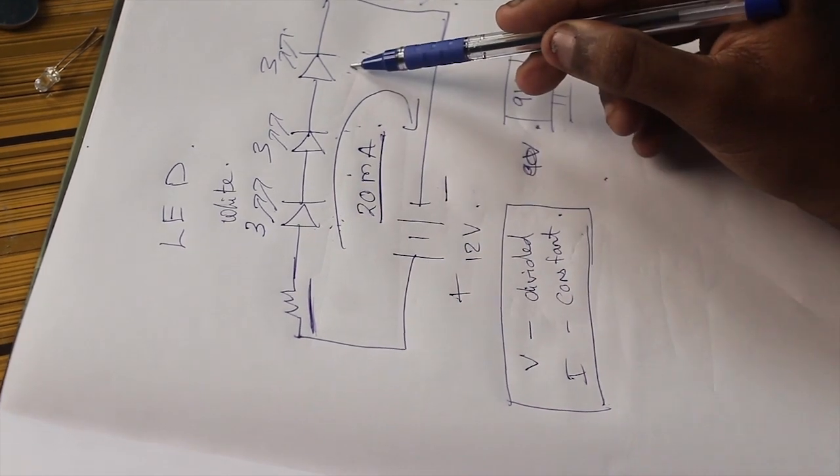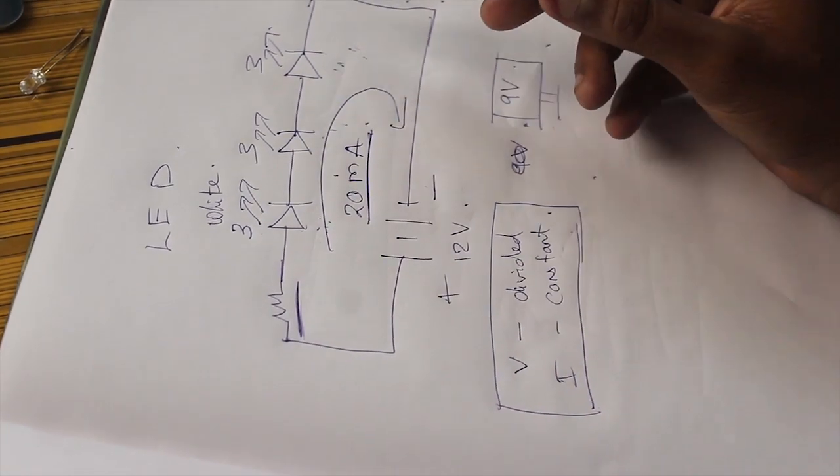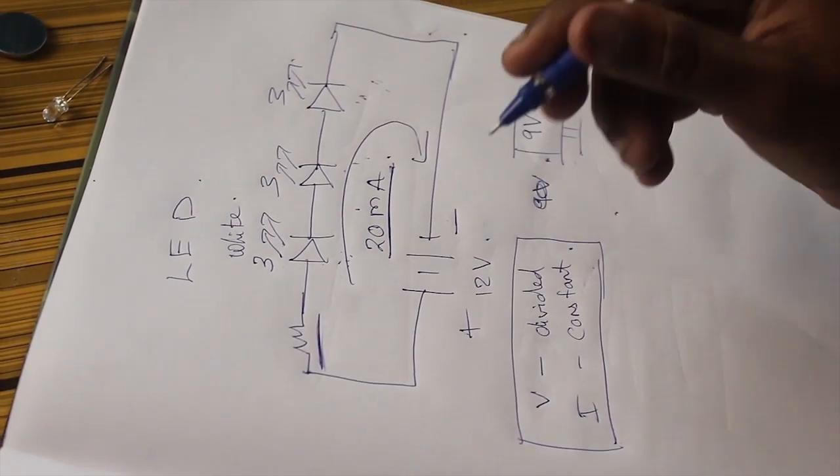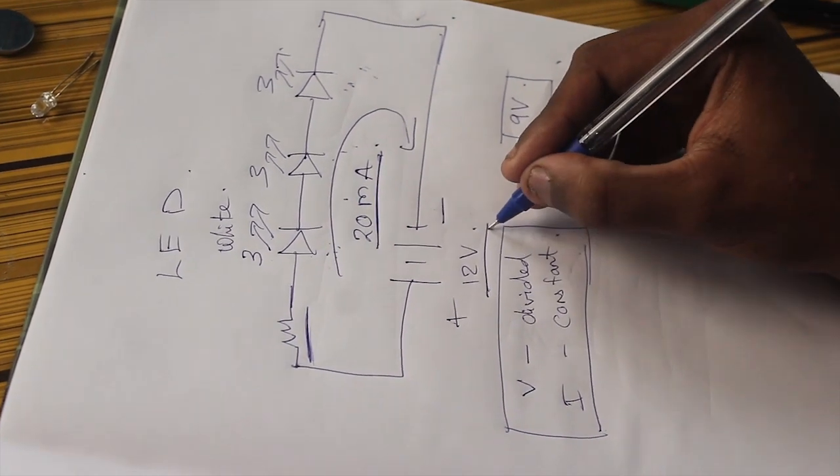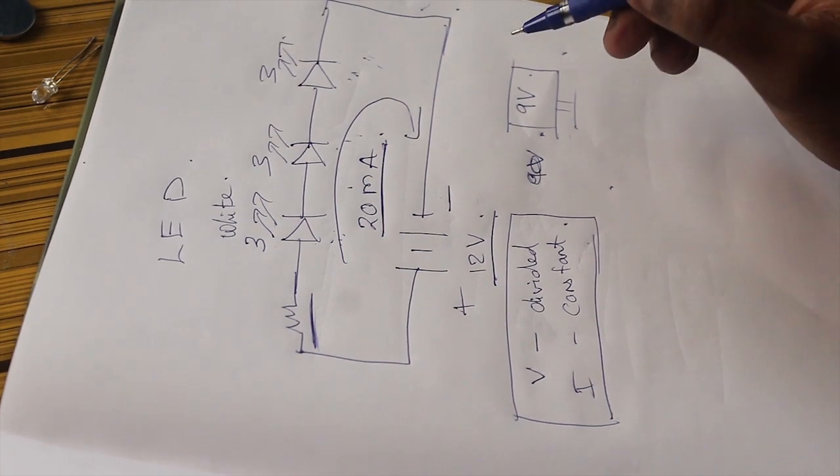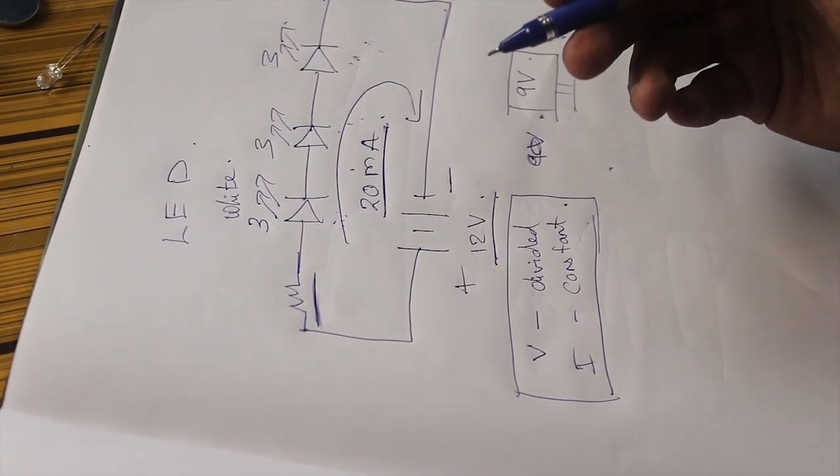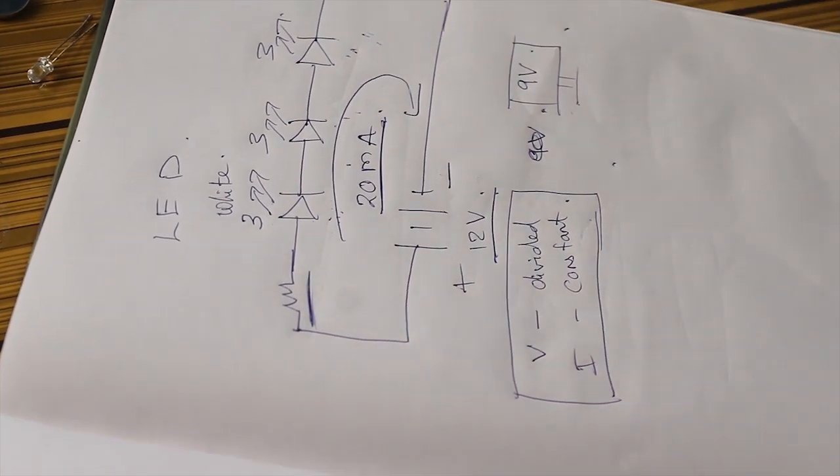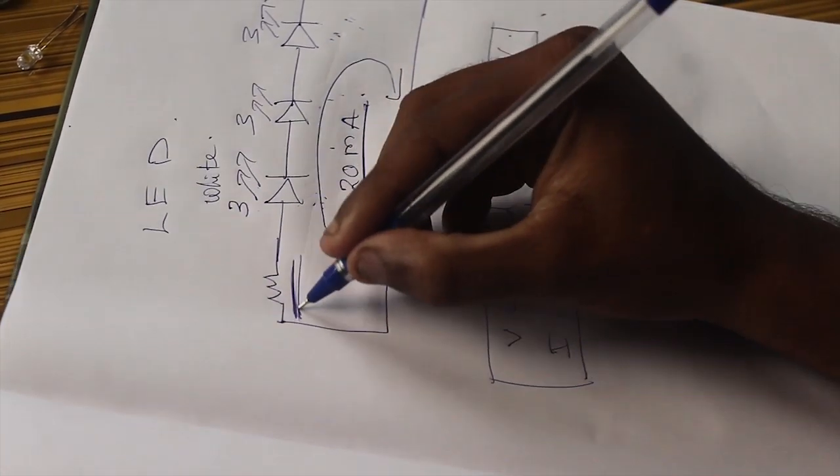When we connect all these LEDs in series, you will get an average of 9V across this circuit. But I am going to connect a 12V supply to this circuit, so we need some resistance to drop the 3V. The voltage should be dropped across the resistor.